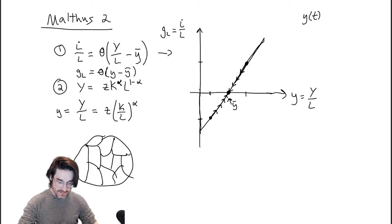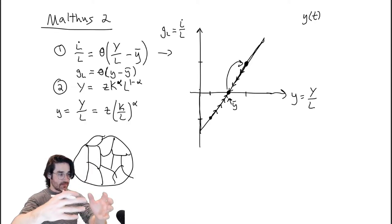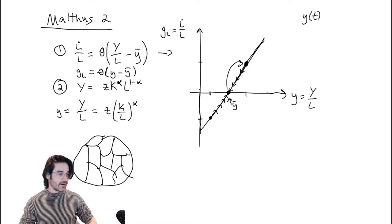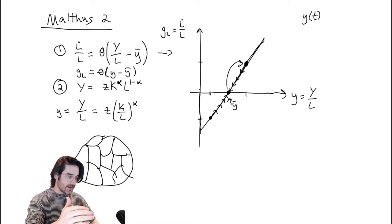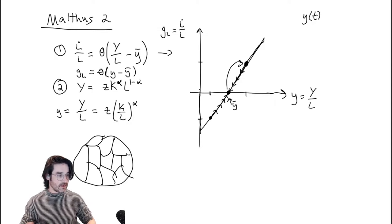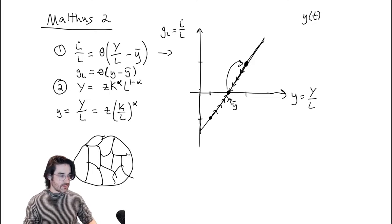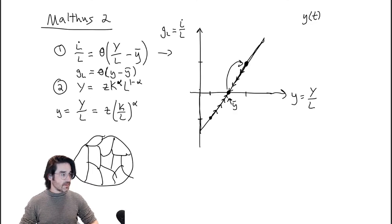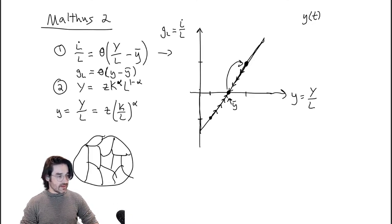After that bump, the same logic pulls you back down. You have a temporary increase in output, but that induces population growth, things get more crowded, output per person goes down, and eventually you end up back at y-bar. In the short run it's good, but in the long run you converge back to the same standard of living. You also have more people, which may be valued societally.